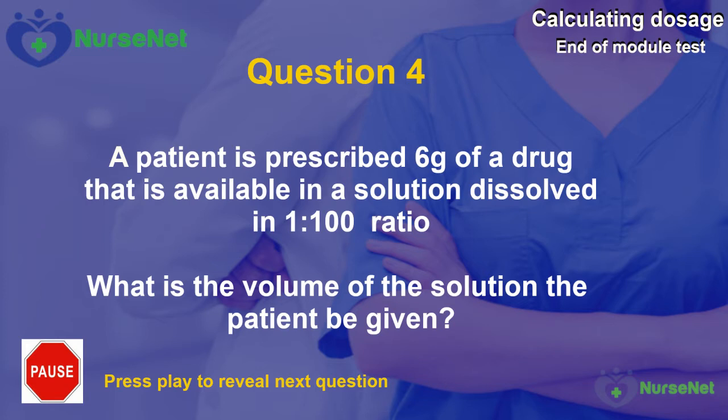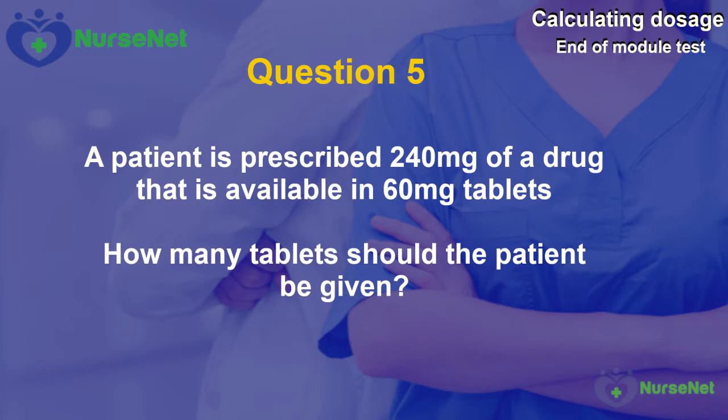Question 5. A patient is prescribed 240mg of a drug that is available in 60mg tablets. How many tablets should the patient be given?